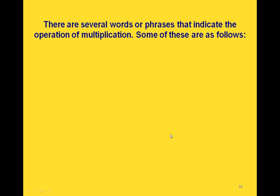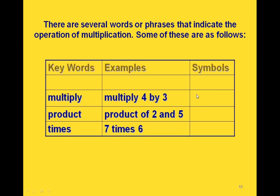There are several words or phrases that indicate we need to do multiplication. If we say 'multiply,' that tells us to multiply — so 'multiply 3 and 4' means 3 times 4. 'The product' means the result of a multiplication, so 'the product of 2 and 5' means multiplying 2 and 5. And 'times' is another word for multiplication, so '7 times 6' means multiplying 7 and 6. Notice it doesn't matter which order you do the multiplication in.